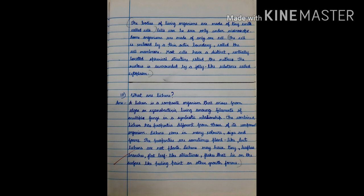Tenth question. What are lichens? Answer. A lichen is a composite organism that arises from algae or cyanobacteria living among filaments of multiple fungi in a symbiotic relationship. The combined lichen has properties different from those of its component organism.